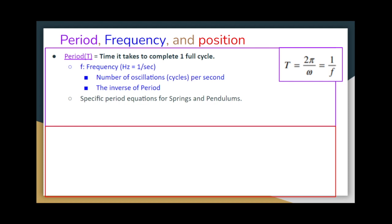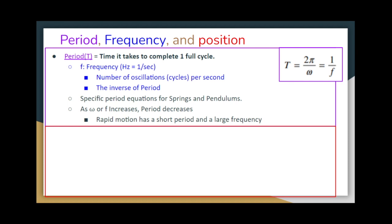There are specific period equations for springs and pendulums, which we'll cover below. As omega or F increases, period decreases. Omega is our angular velocity, and as angular velocity increases, the period — the time to complete one cycle — decreases. Think of a merry-go-round: the faster it spins, the less time it takes to complete one cycle. Therefore, rapid motion has a short period and a large frequency.